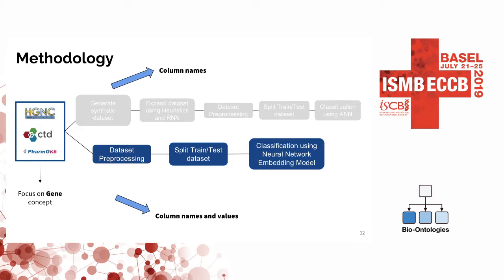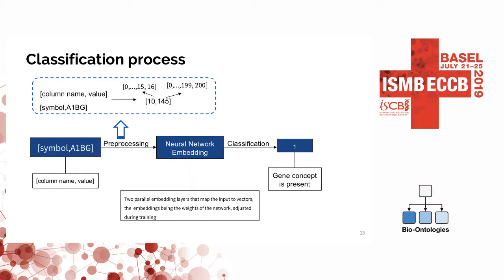Again, we did data preprocessing, splitting and training, and then classification using an embedding model. We have pairs of both column names and values inside those columns. For preprocessing, we indexed the column name from 0 to 16, since we used only 17 columns in total. For the values, we indexed them starting from 0 — for example up to 200 — and whenever we found a new value not yet encountered, we increased this number. Then we used a neural network embedding with two separate embedding layers, both for the column names and the values, and the same binary classification to see if the gene concept is present.